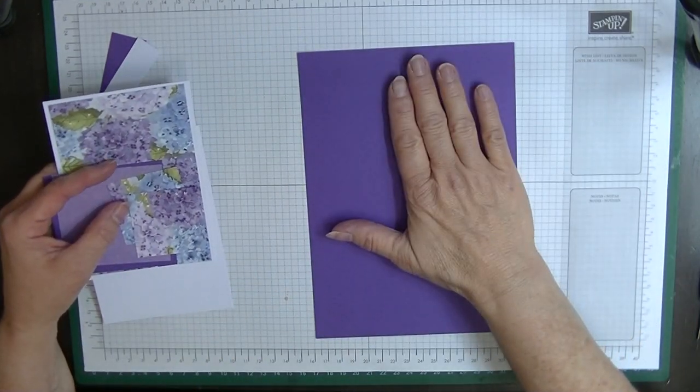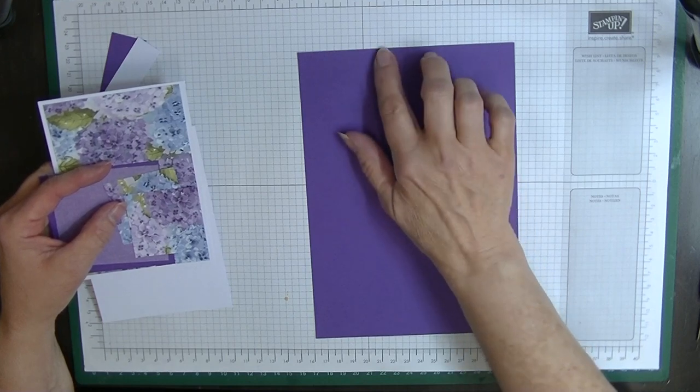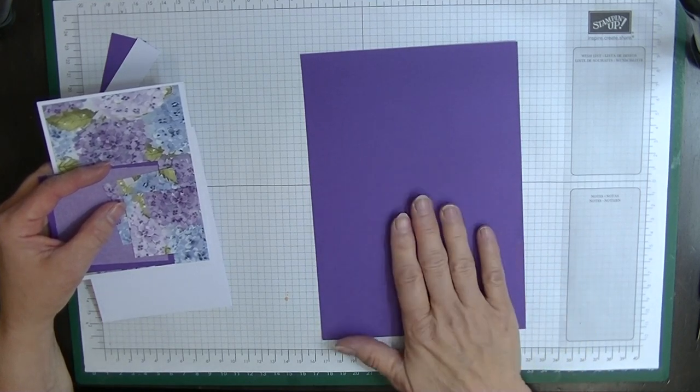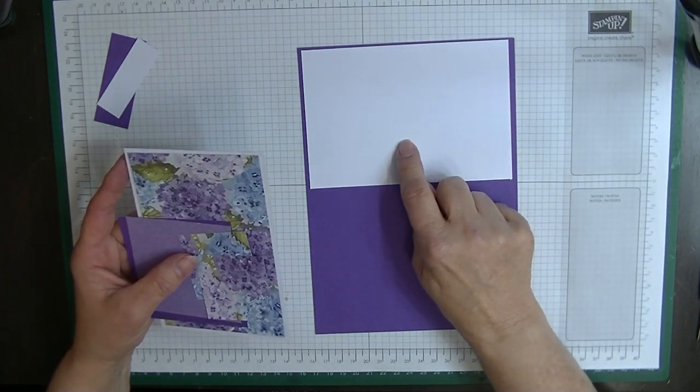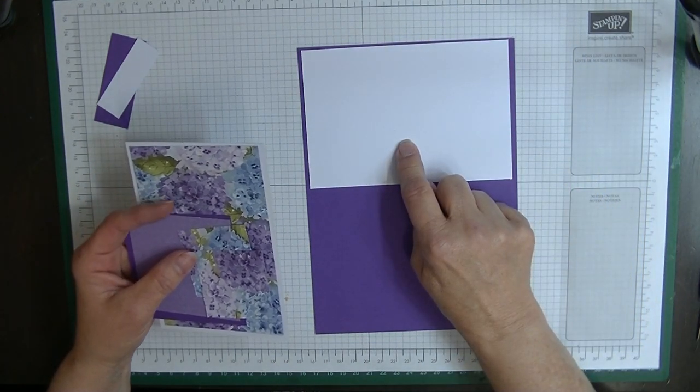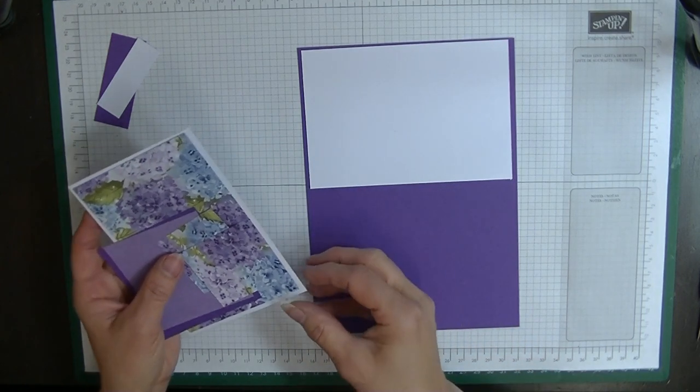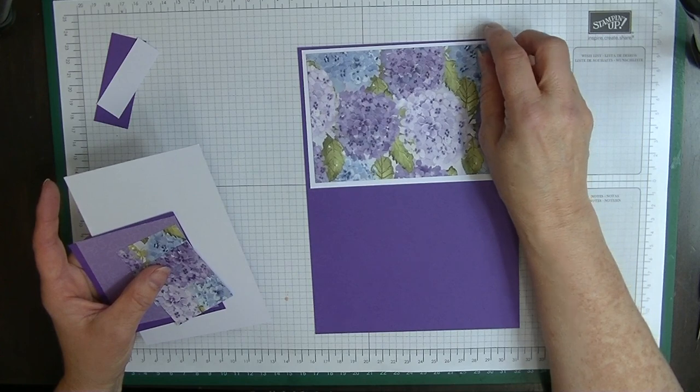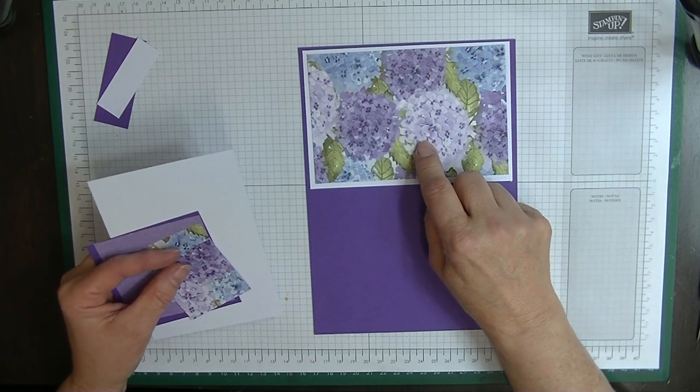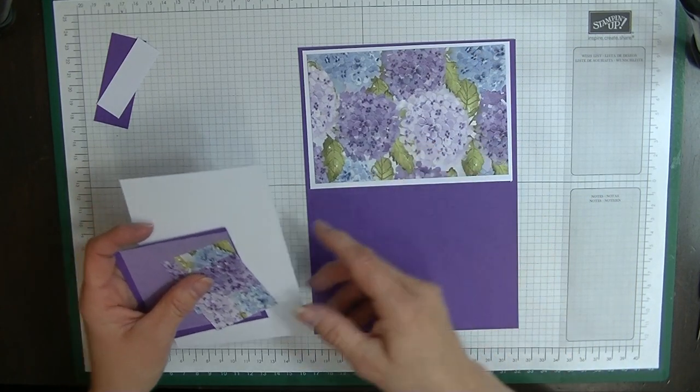We're going to need a card blank that measures five and seven eighths by eight and a quarter. For my front panel, I'm going to use a piece that measures five and five eighths by three and seven eighths, and a designer series paper piece that measures five and three eighths by three and five eighths.